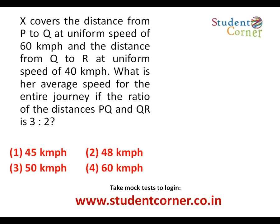The first model: X covers the distance from P to Q at a uniform speed of 60 km per hour, and the distance from Q to R at a uniform speed of 40 km per hour. There are two distances and two speeds mentioned. The question is: what is the average speed for the entire journey if the ratio of the distances is given? Since the distances are not equal, what is the rule for average speed?